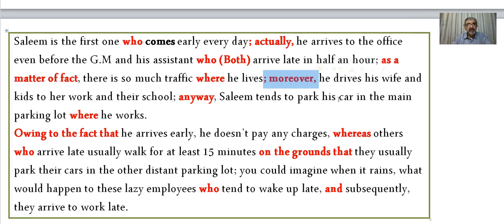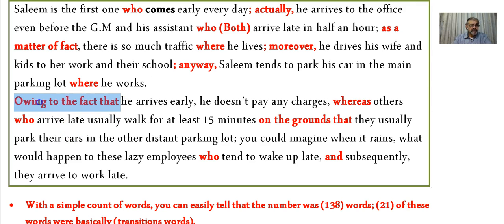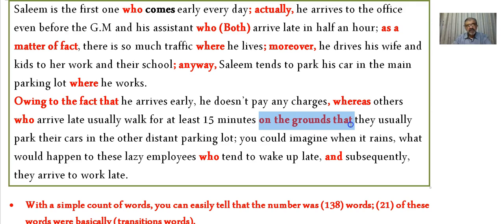'Salim tends to park his car in the main parking lot where he works, due to the fact that — which means because, but creates more alternatives — he arrives early; he doesn't pay any charges. Whereas' — a contrast transition — 'others, that is employees who arrive late, usually walk for at least 50 minutes, on the grounds that — also meaning because — they usually park their cars in the other distant parking lot.' A punctuation mark saves the situation; I don't have to keep using transitions. Punctuation marks and transition words work side by side.